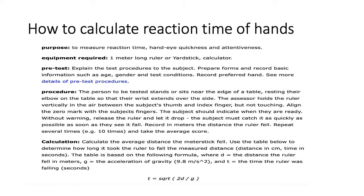The test is simple — we'll see how quickly you catch the ruler when it is dropped, and record the reading. With hand-eye coordination we can see how well your nervous system coordinates with your muscular system. Hand movement involves muscles, and your eyes watch the stimulus which goes to your brain and then you react. All this gives us your reaction time. You need one foot rule or scale and a calculator.